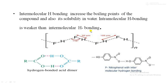Intramolecular hydrogen bonding is weaker than intermolecular hydrogen bonding. Here is another example: hydrogen fluoride HF with another HF molecule. This shows hydrogen bonding between hydrogen and the more electronegative fluorine atom, represented by dotted lines as hydrogen bonds.